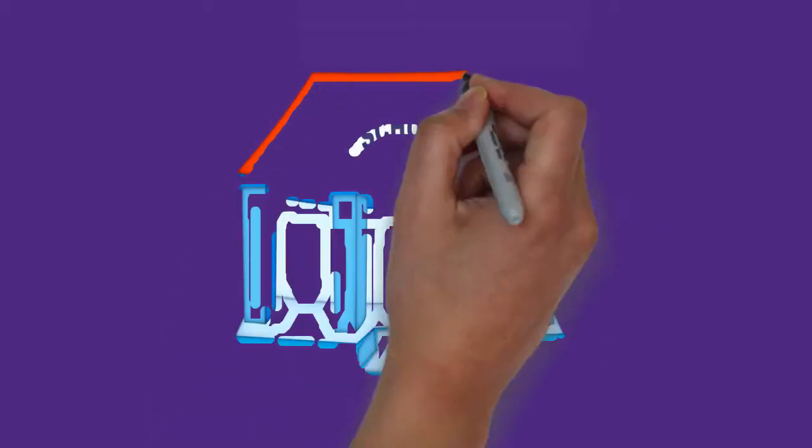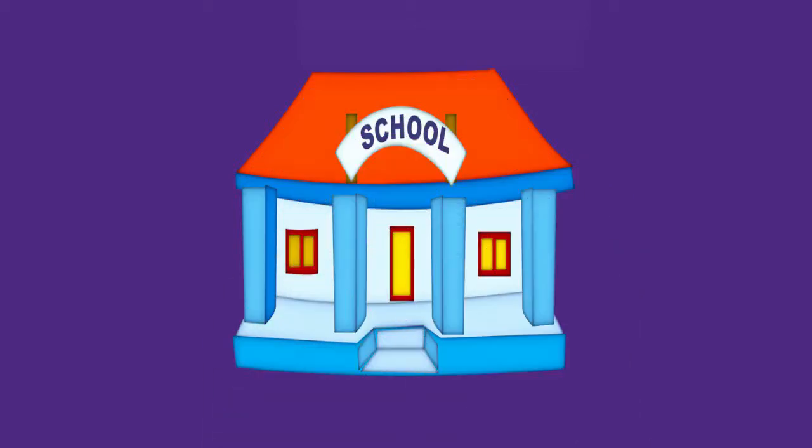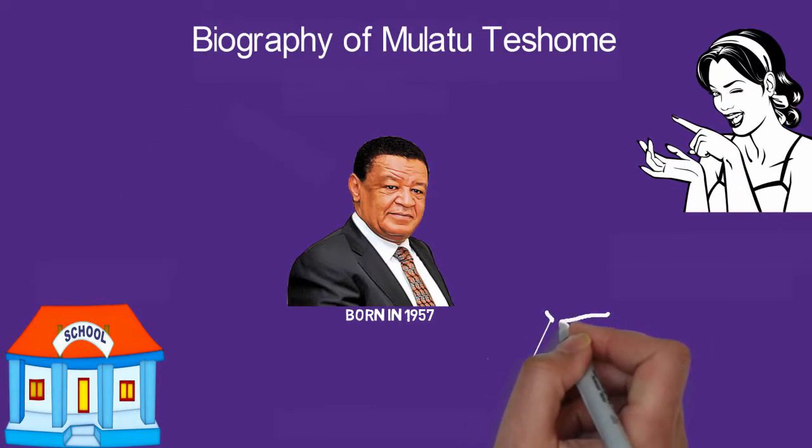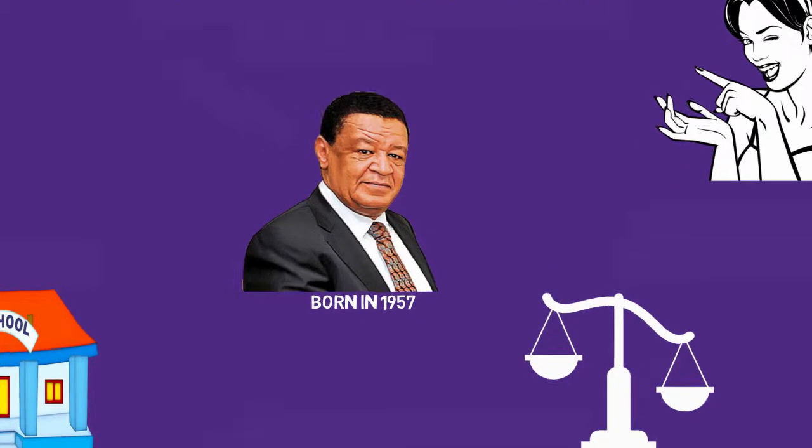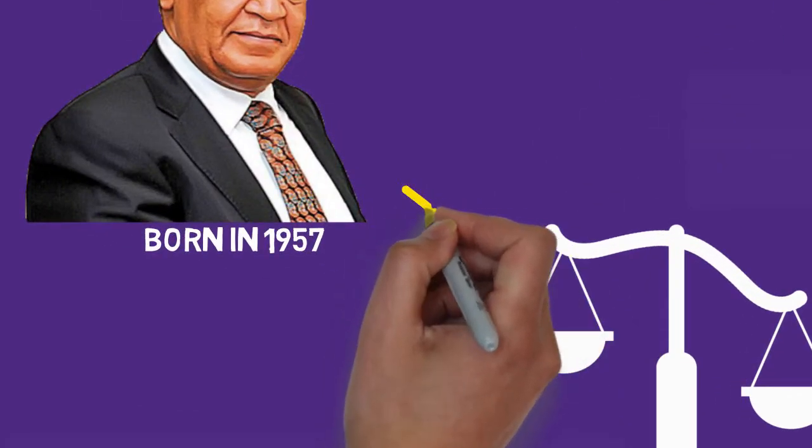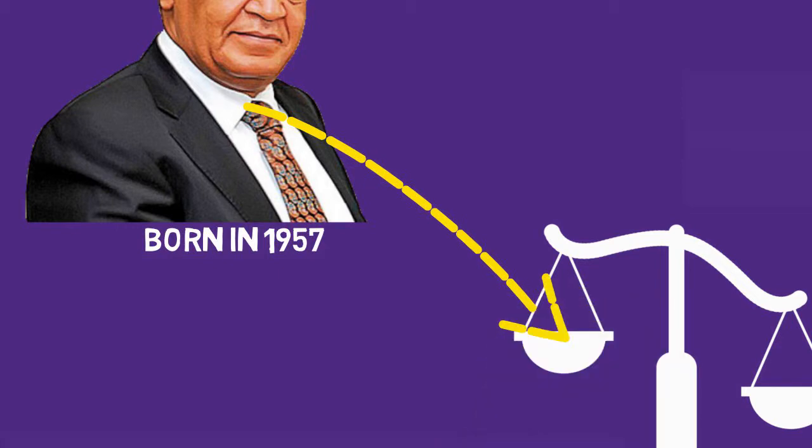He had most of his education in China. With a government-funded scholarship, he received a degree in philosophy of political economy. Afterwards, he got a Master's of Art in Law and Diplomacy from the Fletcher School of Law and Diplomacy at Tufts University in 1990. Mulatu has a doctorate degree in International Law at Peking University.